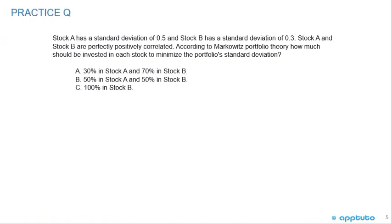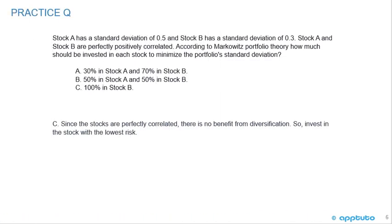Another quick practice problem. Stock A has a standard deviation of 0.5 and stock B has a standard deviation of 0.3. Stock A and stock B are perfectly positively correlated. According to Markowitz's portfolio theory, how much should be invested in each stock to minimize the portfolio's standard deviation? A: 30% in A and 70% in B. B: 50% in A and 50% in B. Or C: 100% in stock B. It's a bit of a trick question — since the stocks are perfectly positively correlated, there is no benefit from diversification, so you'd invest entirely in the stock with the lowest risk. The correct answer is C: 100% in stock B.